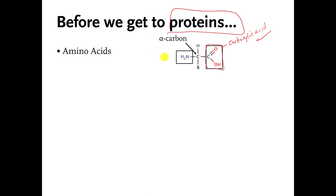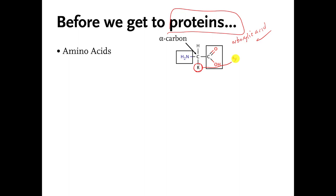So every amino acid molecule I'm going to talk about has this amine functional group, this carboxylic acid functional group, and a carbon in between the two. This alpha carbon always has a hydrogen attached to it as well. Then it has R attached to it. So what I'd like you to do now is pause the video and tell me what element R is. If you actually spent some time doing this, you're going to be upset because there is no element with a symbol of R. What R means when you see it in a chemical structure like this is that some other atoms go here — it's like a placeholder.